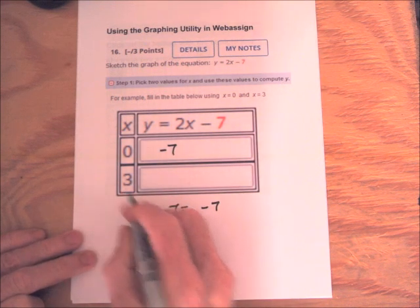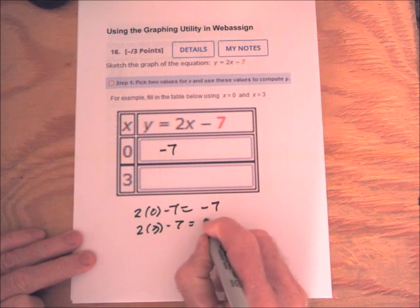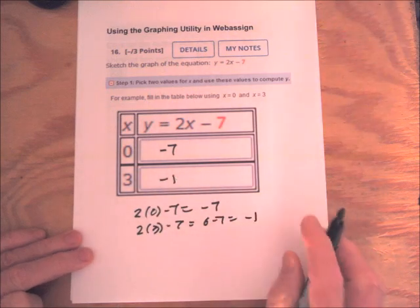And if x is 3, y will be 2 times 3 minus 7, which is 6 minus 7, which is negative 1. So we can fill in negative 1 there.